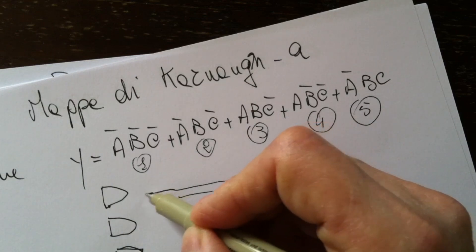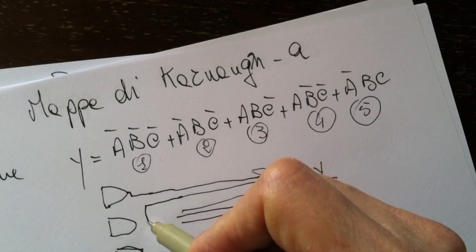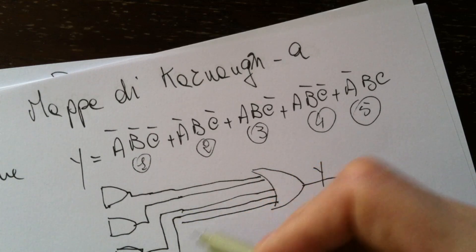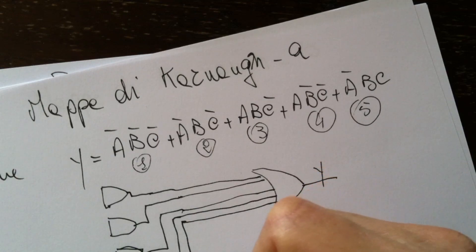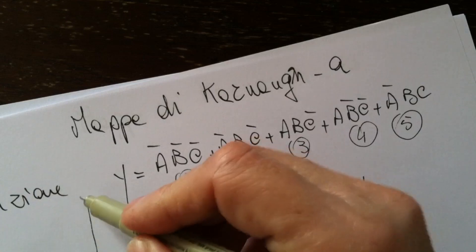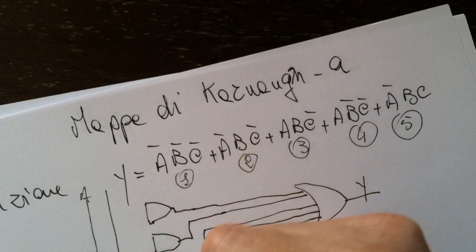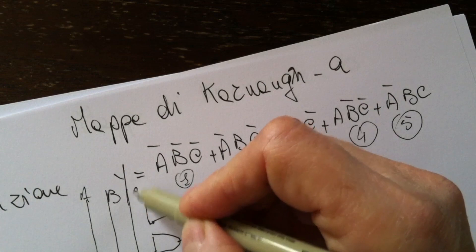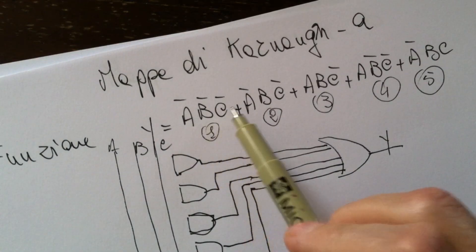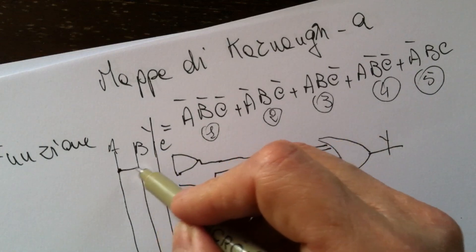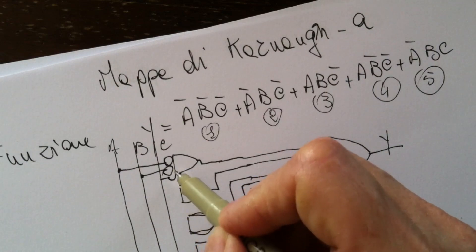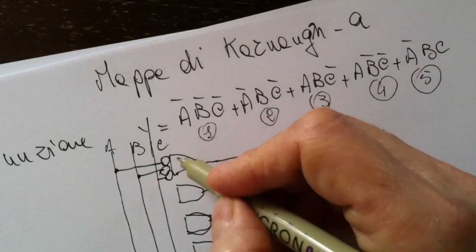Then we connect the lines with the ports. We consider the three terms A, B, and C — the second one is B, and the third one is C. Then we draw the inputs: NOT A, NOT B, NOT C for the first port.